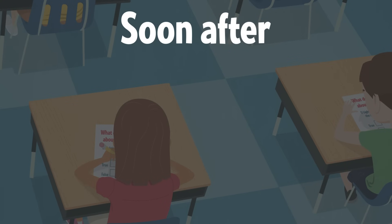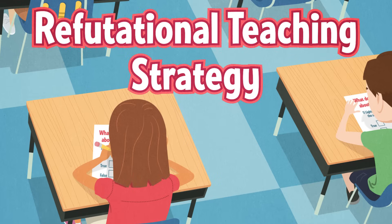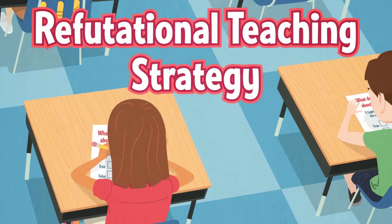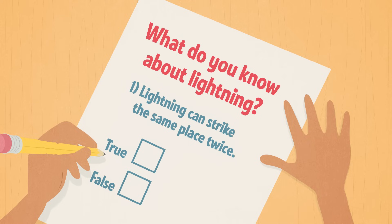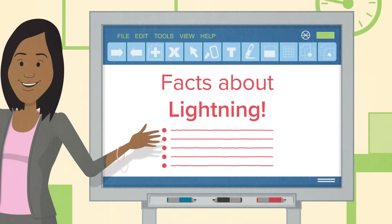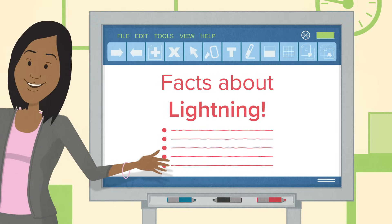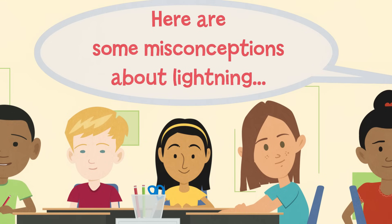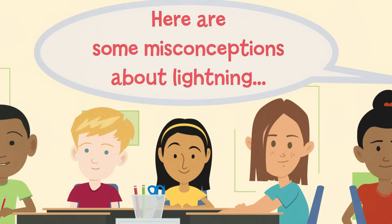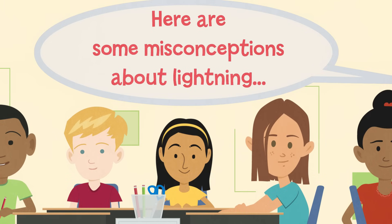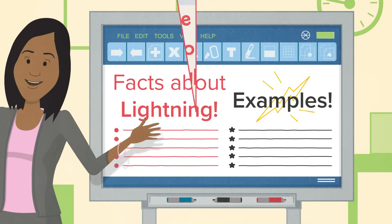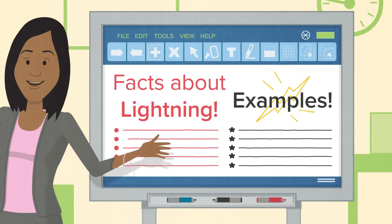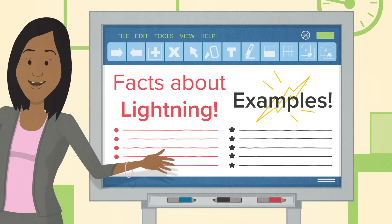In order to do that, our teacher employed a refutational teaching strategy. First, she started with a pretest that helped the teacher identify misconceptions about lightning ahead of time. Next, she carefully laid out the facts, presenting evidence for the conclusion. It was only after laying out the facts that the teacher addressed common misconceptions that many people have about the issue, and again reinforced the correct conclusion with facts and examples.